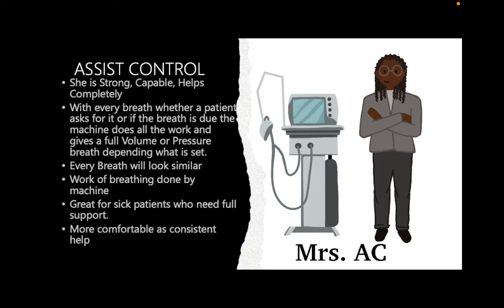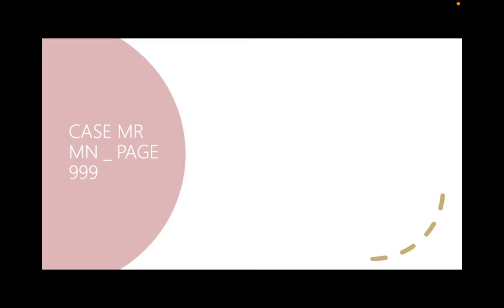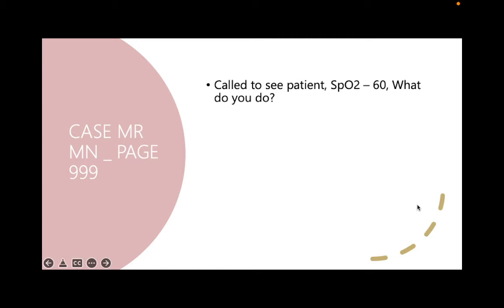Good — your patient settled on the vent. Now on AC mode you're not going to repeat the blood gas because your minute volume has come down, so you're probably okay. Then the nurses call 999 and tell you your patient is desatting — sats are 60. What do you do? Increase the FiO2, crank it to 100 — buy yourself some time. You increase FiO2, sats come to 70. What do you do next?